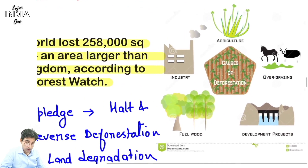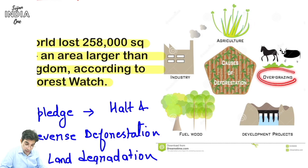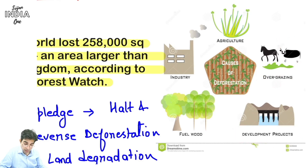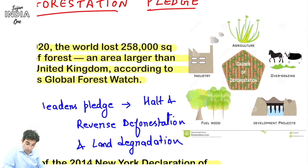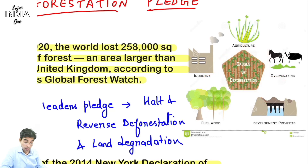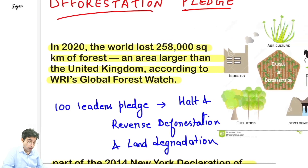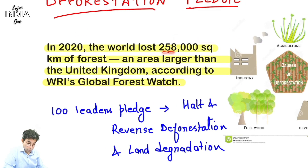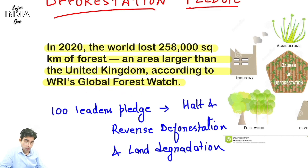Doosri pledge hai deforestation ki - deforestation matlab jangal khatam ho rahe hain. Kyun ho rahe hain? Agriculture ki land badh rahi hai matlab forest land kam ho rahi hai. Over grazing - livestock grazing karta hai toh naya forest ug nahi paata. Development projects hote hain jaise dams ban gaye toh doob mein forest aata hai. Fuel wood ke liye hum jangalon ki kataai karte hain. Industry bhi ek reason hai. 2020 mein world ne lost kiya 258 million square kilometer of forest area - larger than UK, according to WRI Global Forest Watch report.